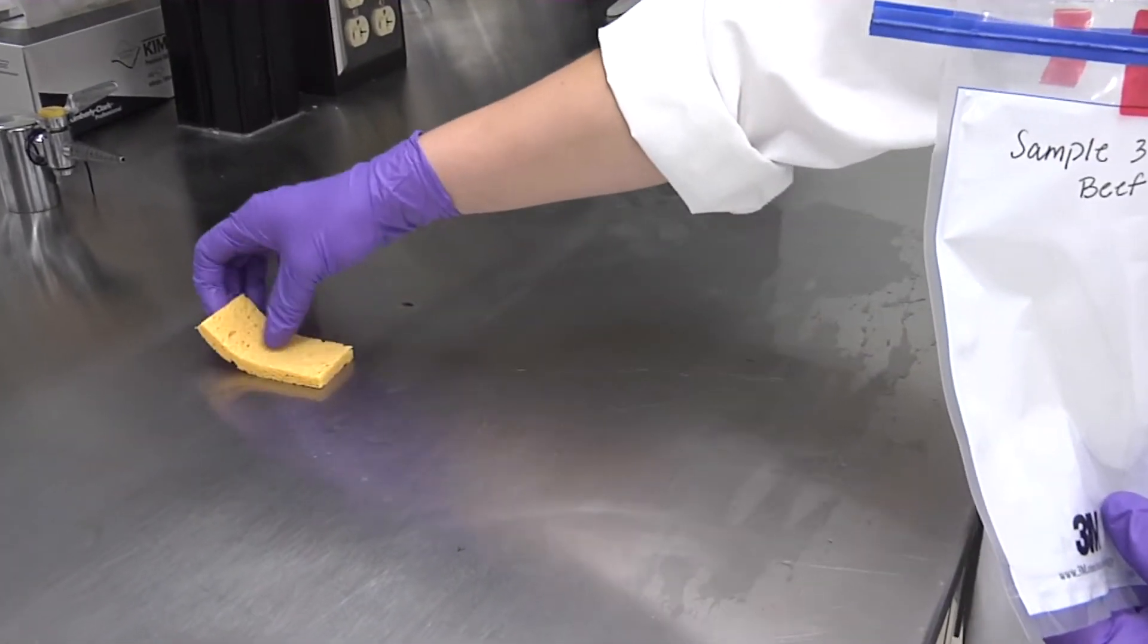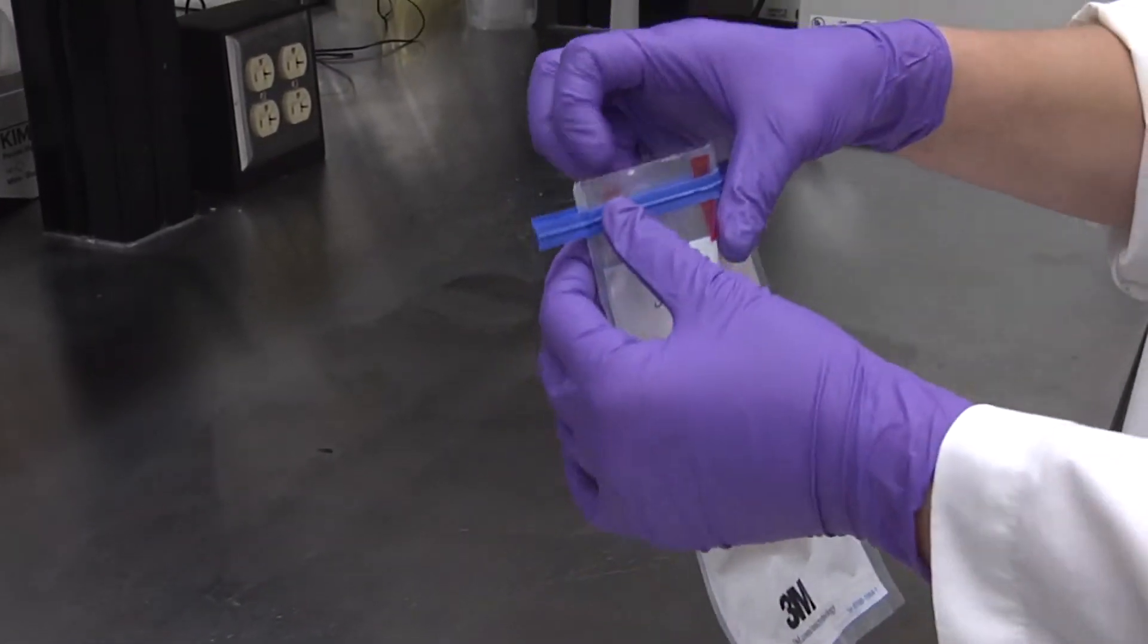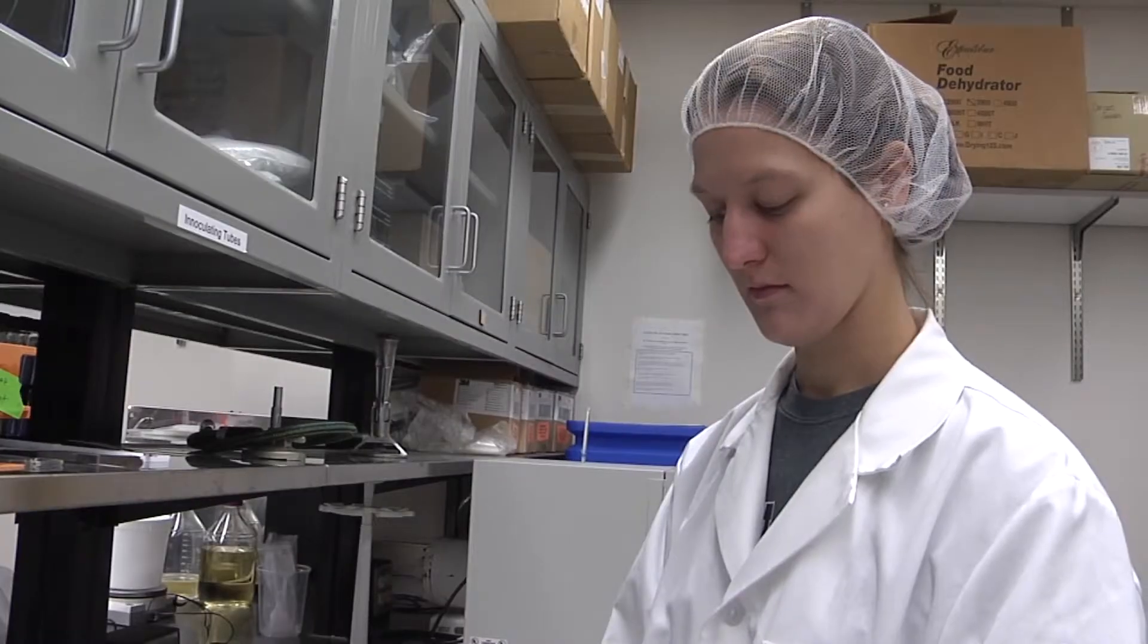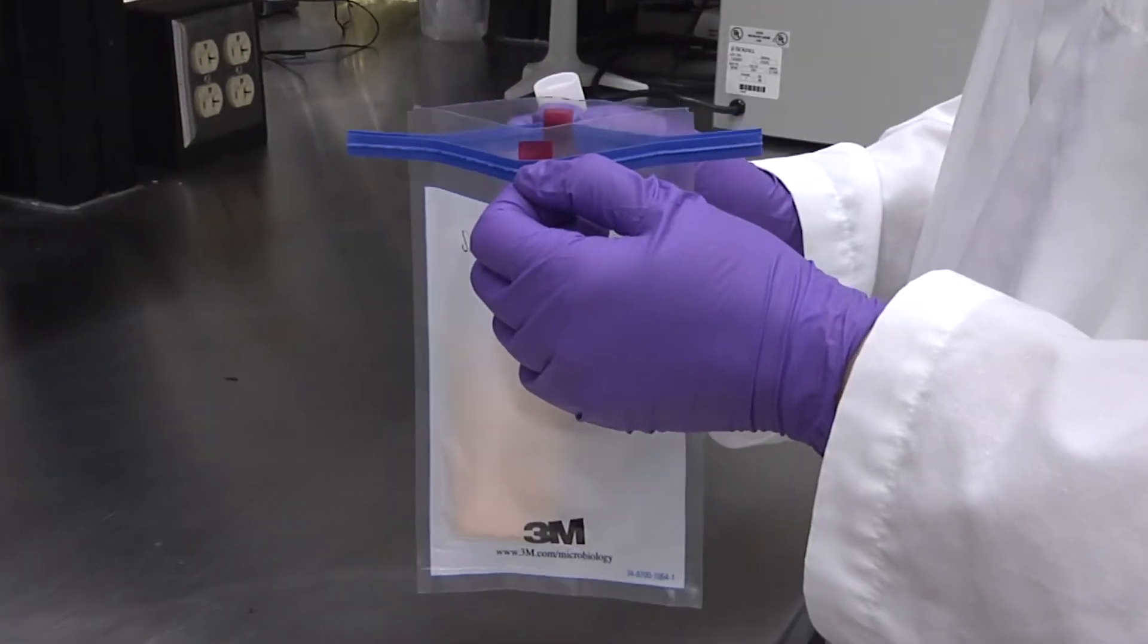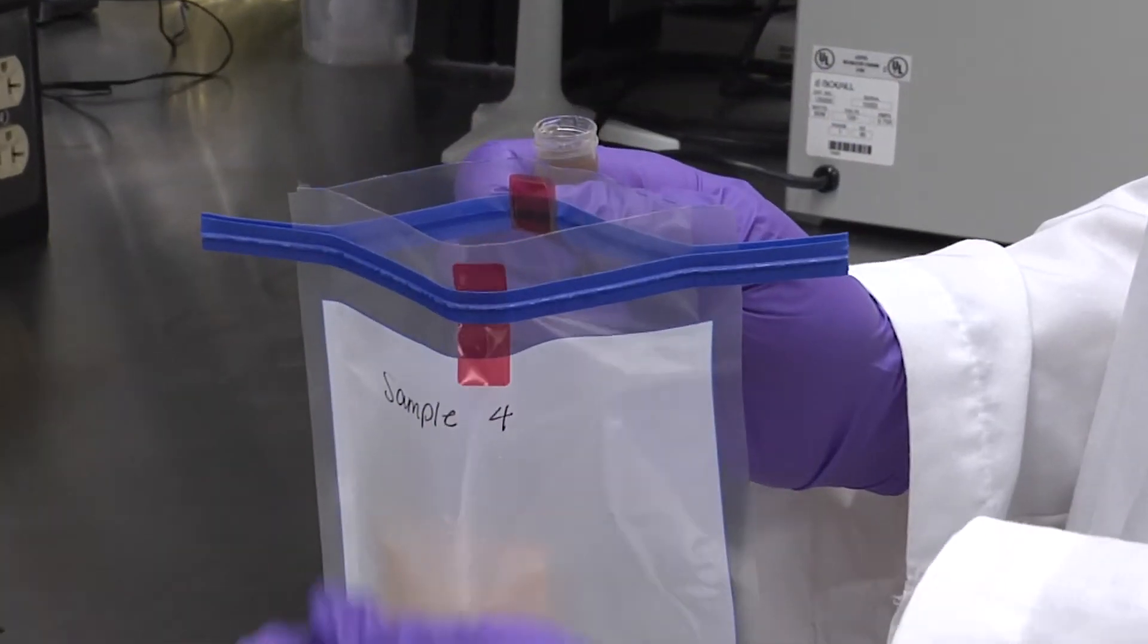When completed, place the sponge back into the same bag. Mark the bag with the designated area using the marker. You can also add enrichment broth to the bag after the sponge has been inserted to start the analytical portion of the testing procedure.